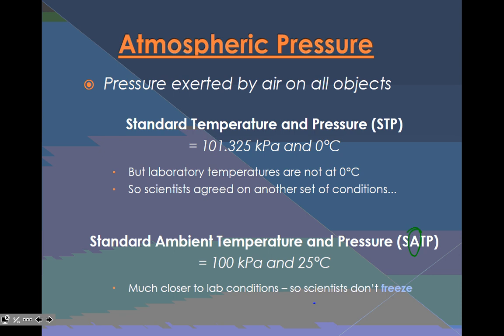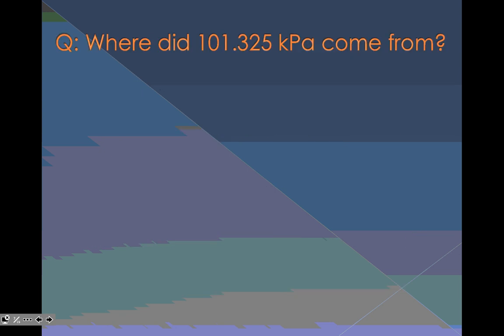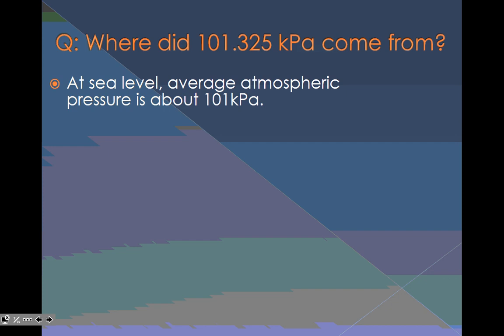Ambient means basically room temperature. So standard ambient temperature and pressure is at 100 kilopascals instead of 101.325 and at 25 degrees Celsius instead of zero. Obviously that's way more comfortable for scientists to perform their studies.